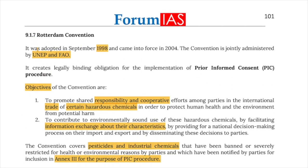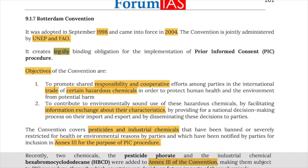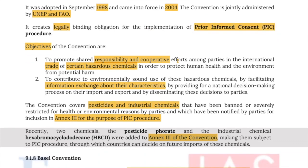The Rotterdam Convention was adopted in September 1998 and came into force in 2004. It is jointly administered by UNEP and FAO and creates legally binding obligations for implementation of Prior Informed Consent (PIC). The objective is to promote shared responsibility and cooperative efforts among parties in the international trade of certain hazardous chemicals, and to contribute to environmentally sound use of these chemicals by facilitating information exchange about their characteristics.